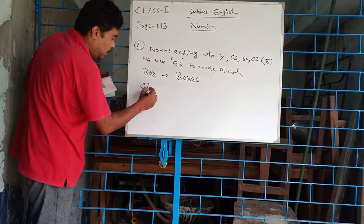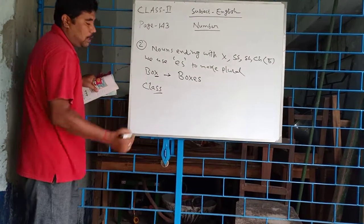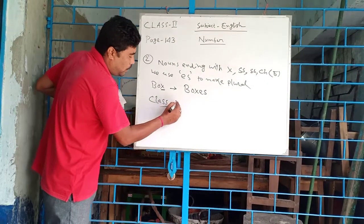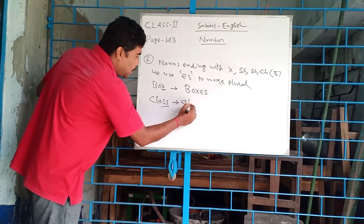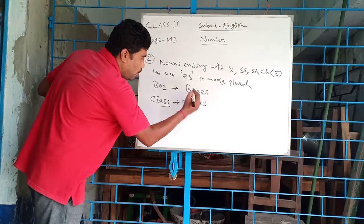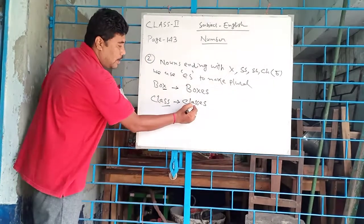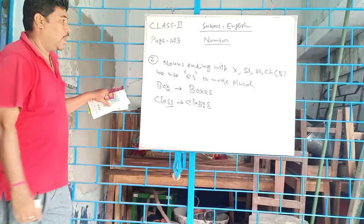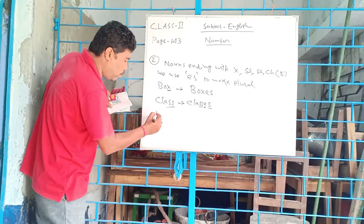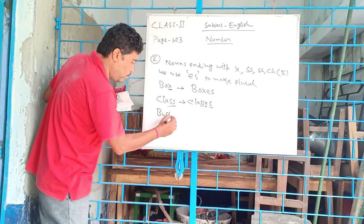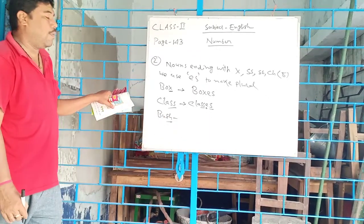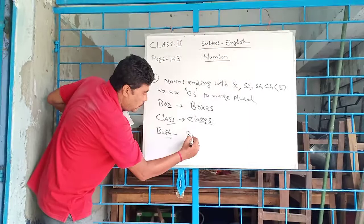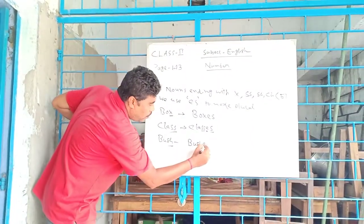Class. Here we see double S. The last two alphabets are double S. We also use here ES to make it plural. Double S plus ES. Now SH, bush. Last two alphabets are SH. That is bush plus ES.